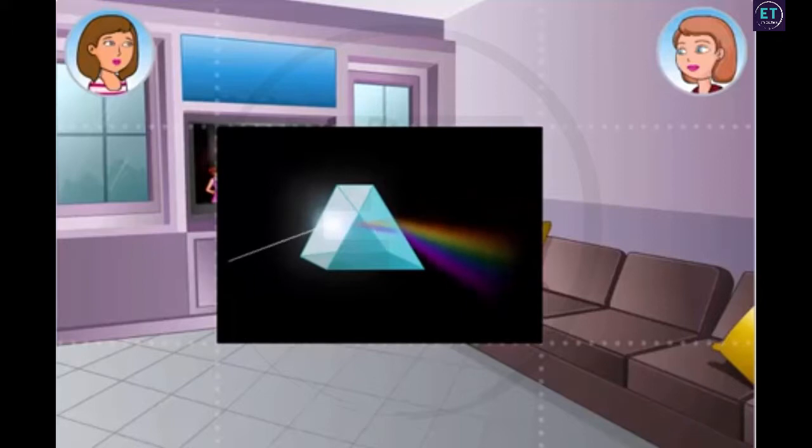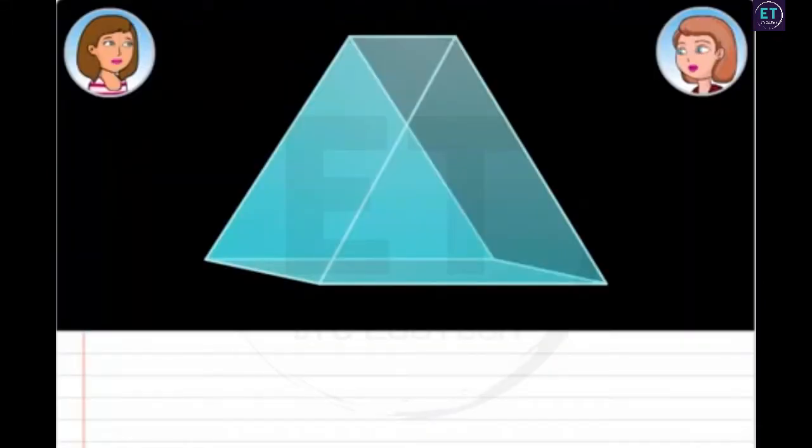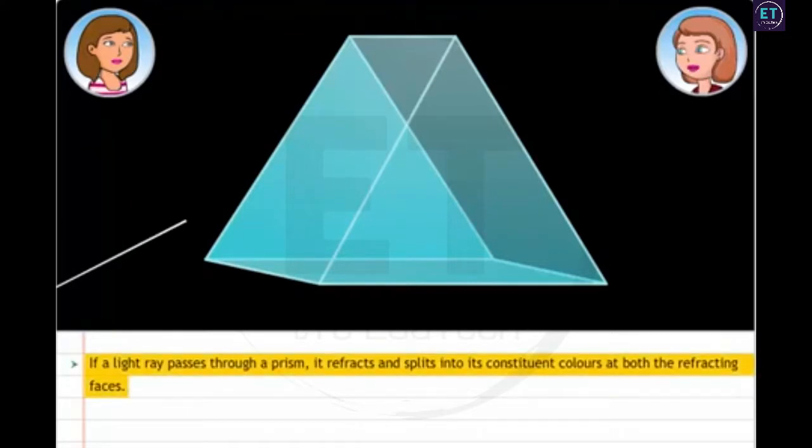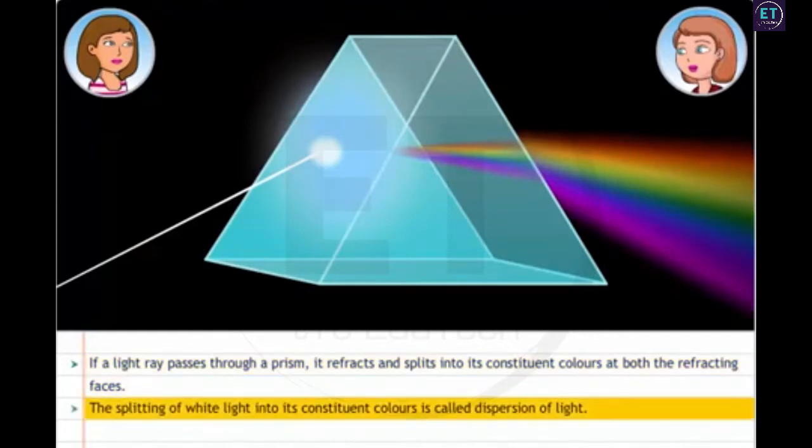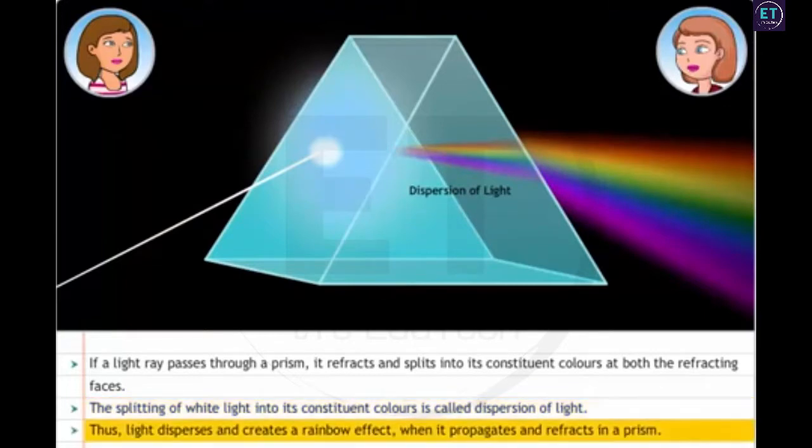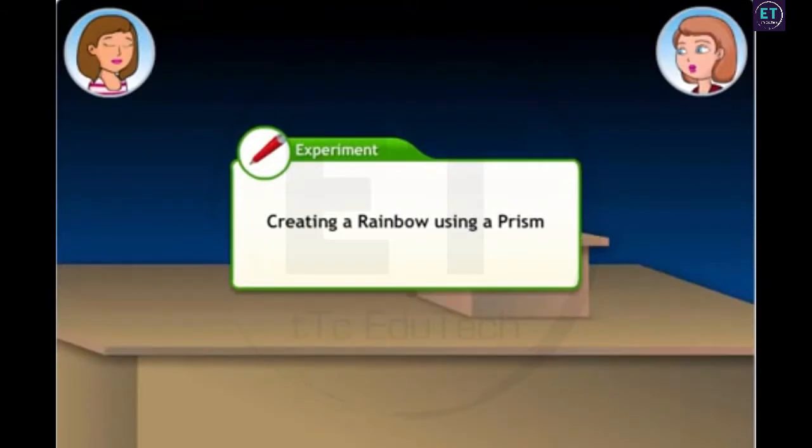Where do these colors come from? You'd be surprised to know that these are all constituents of white light. When a white light ray passes through a prism, it refracts and splits into its constituent colors in the process of refracting through the prism. The splitting of white light into its constituent colors is called dispersion of light. This is how you get the rainbow effect through the prism as well. Light disperses and creates a rainbow effect when it propagates and refracts in a prism. Let's conduct an experiment to see how we can create this rainbow effect.